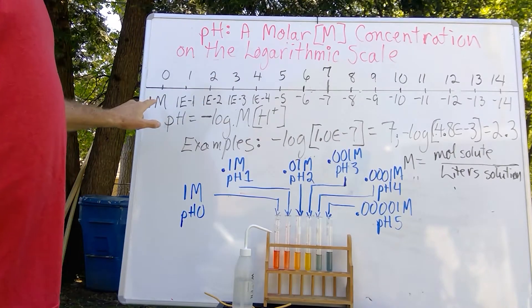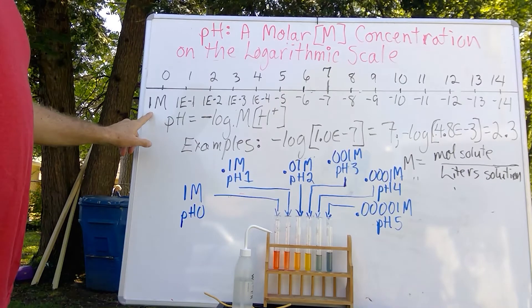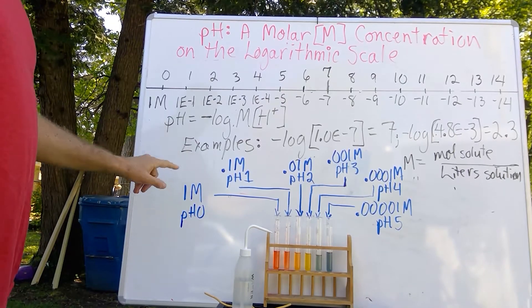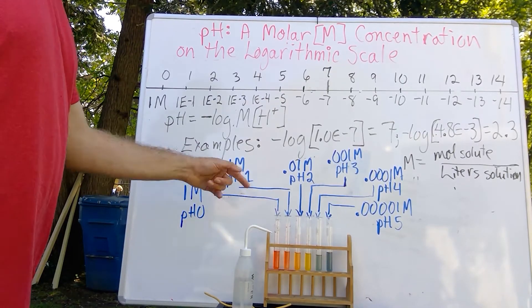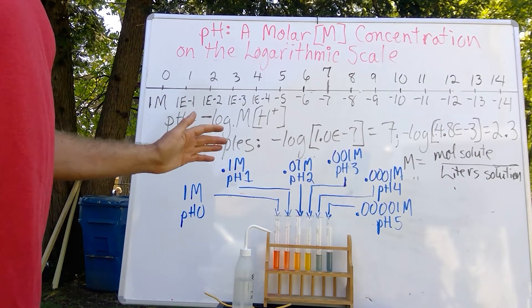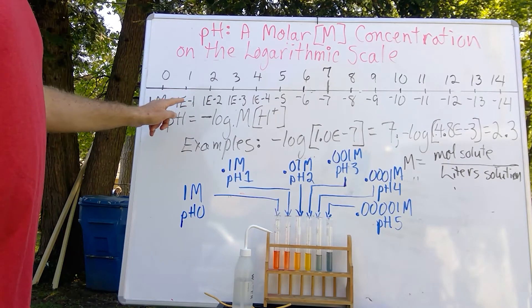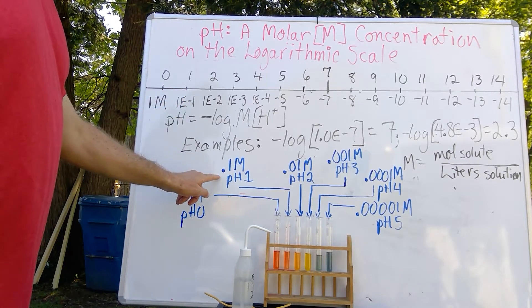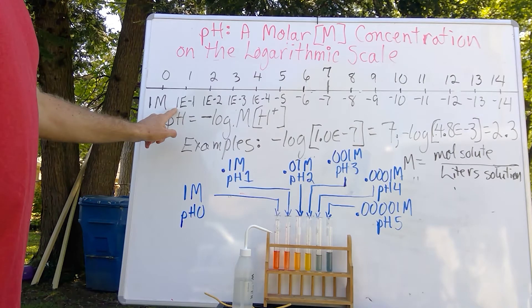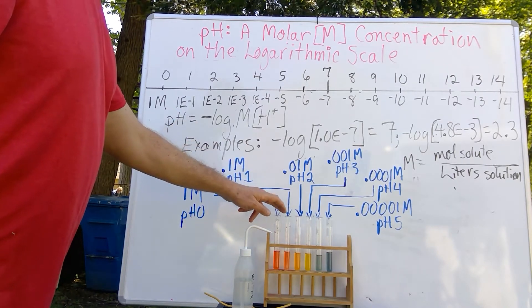So, if we have a 1 molar concentration of our nitric acid and we take the negative log of it, our pH is 0. Take a second to punch it into your calculator and see how this is the case. As we weaken it by a factor of 10 to 0.1 molar, or 1 times 10 to the negative 1, we are at pH 1.